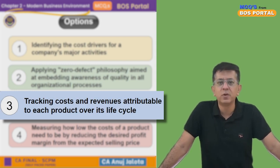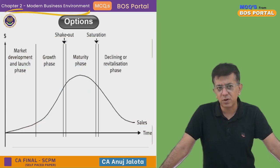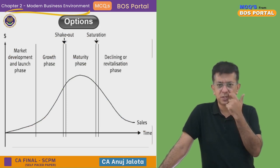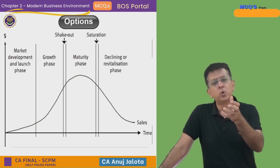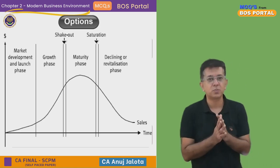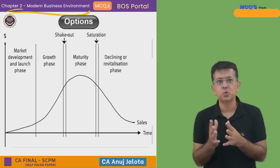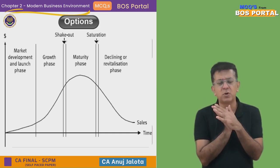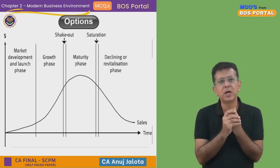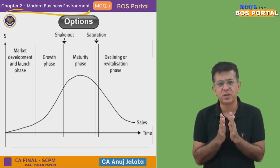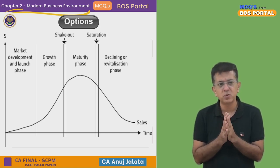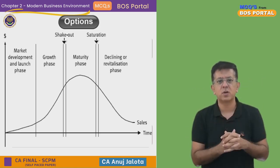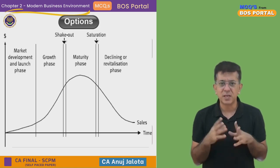Life cycle means the product gets introduced first — the introduction stage, where the product is known to few people. Then there is the growth stage, where the product starts to catch on. Next is the maturity stage, where the product is at its peak, but then starts to go down. Lastly, there is the declining stage — the time we stop producing. From introduction till we stop, this entire duration is called the product life cycle.